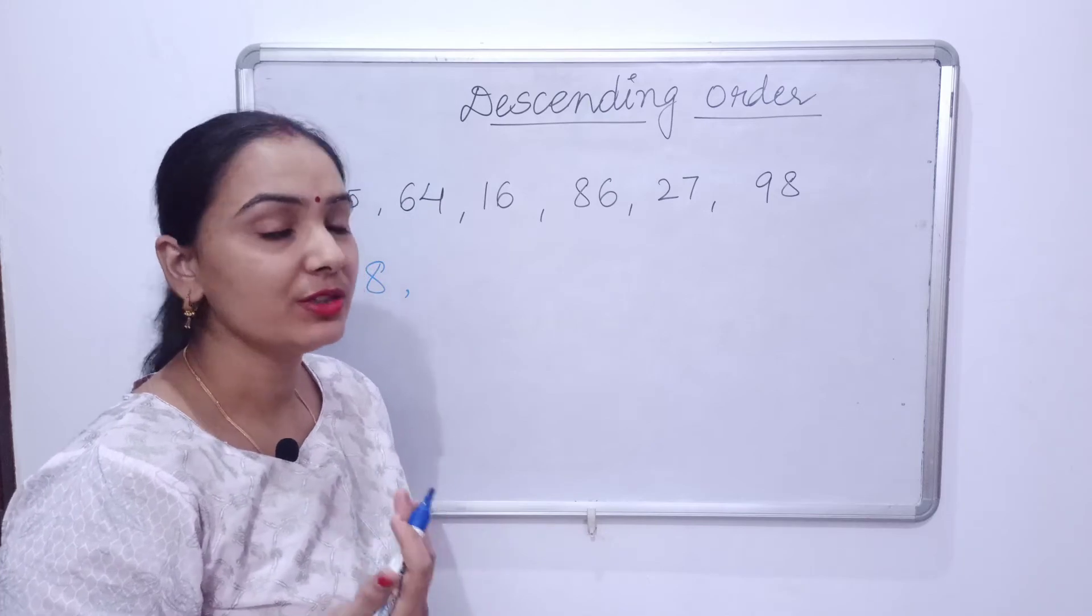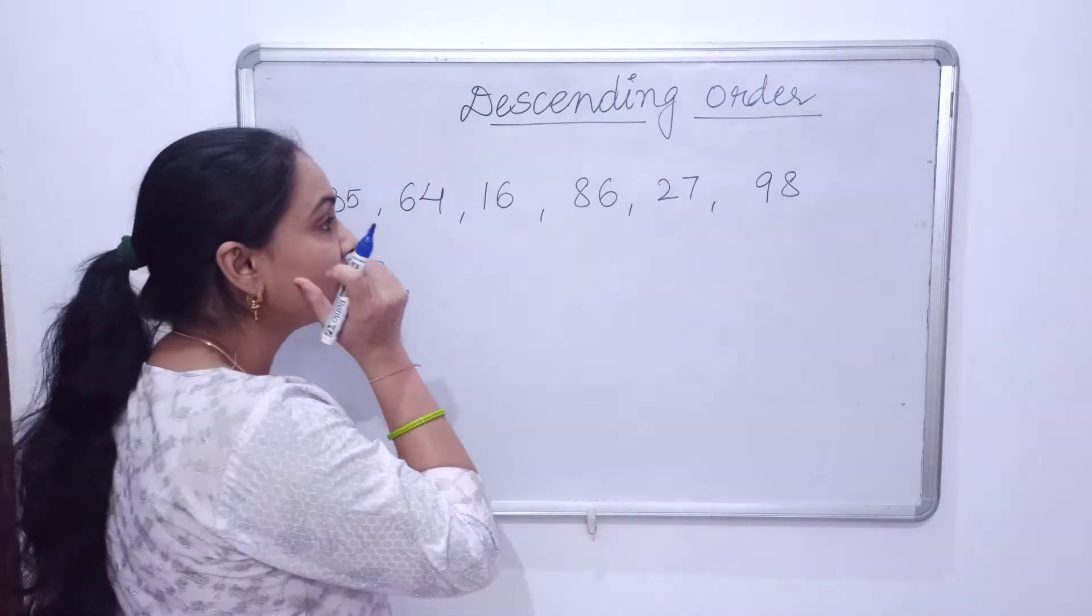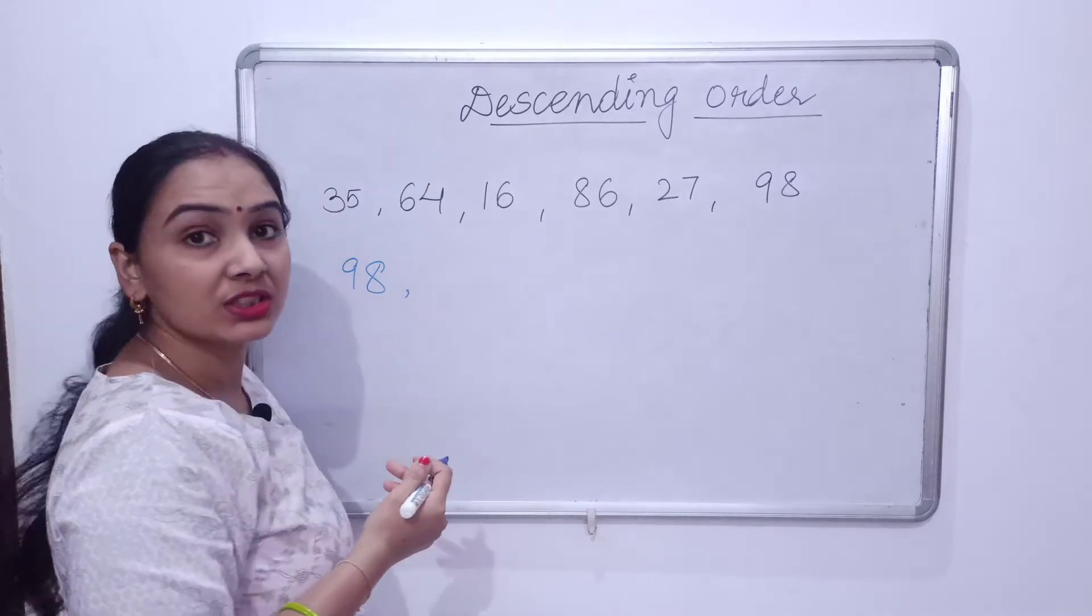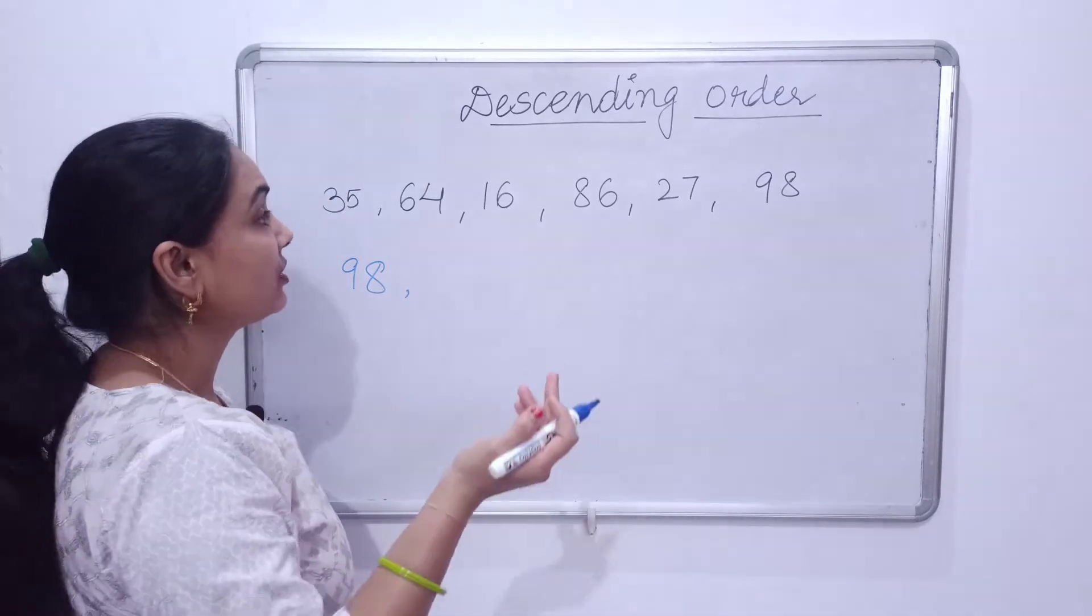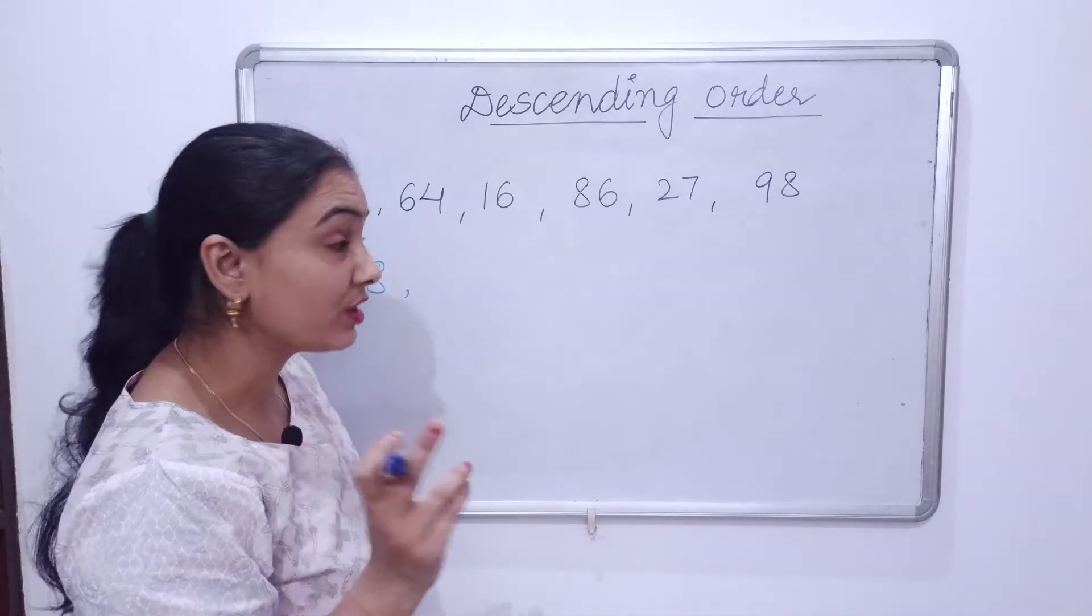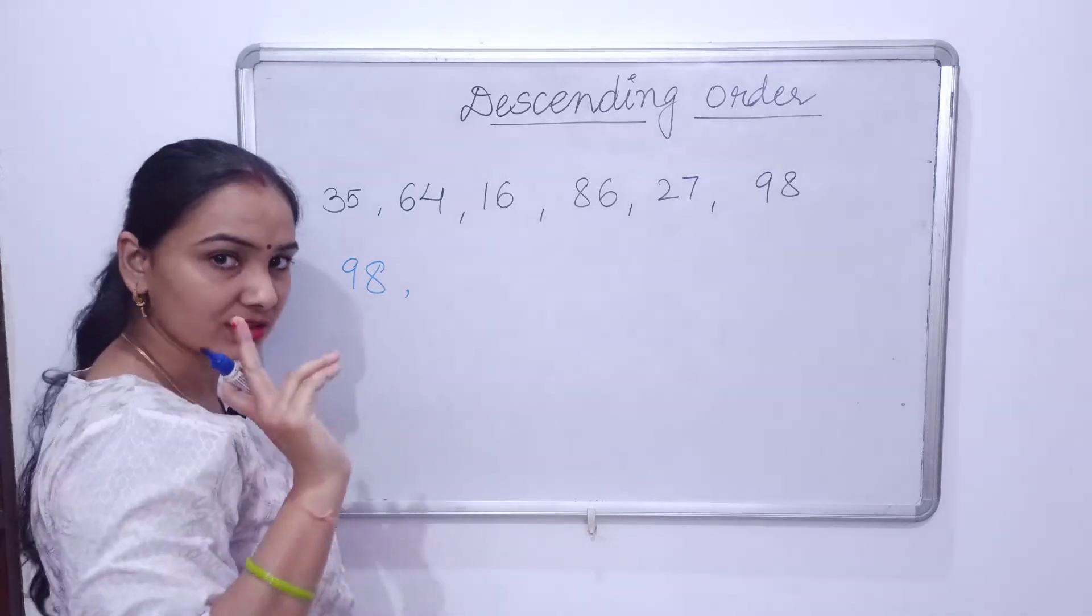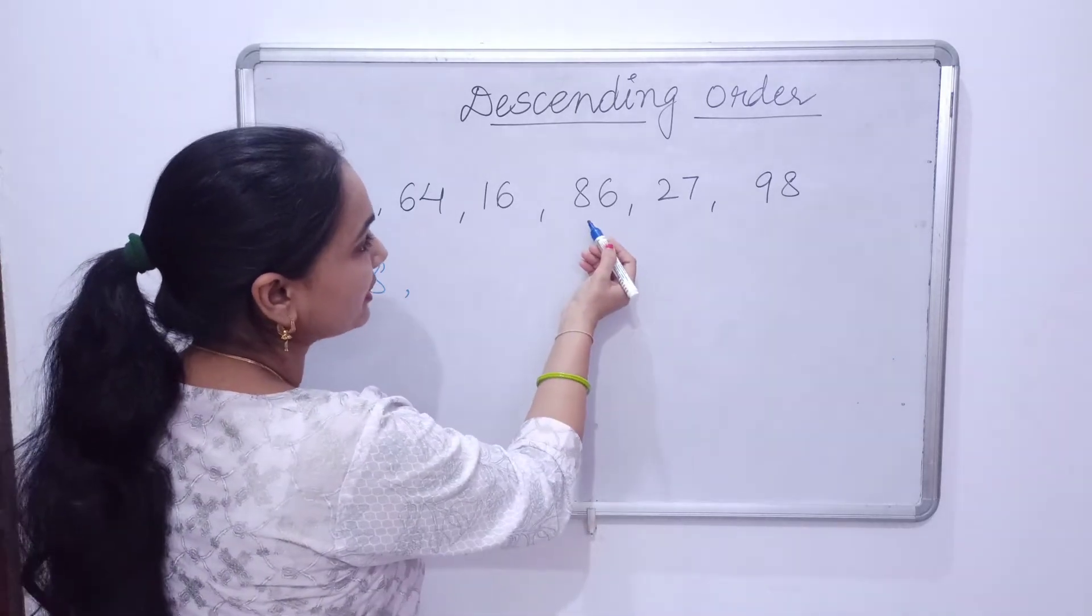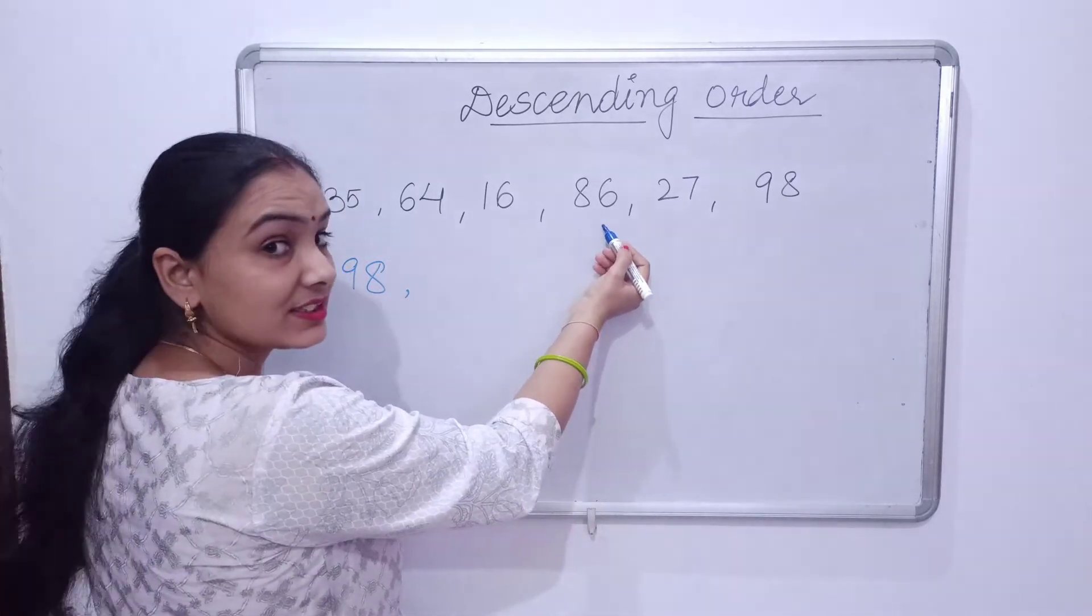We'll move on. So now we'll choose the next biggest number which is smaller than 98. That is here, it is 86.